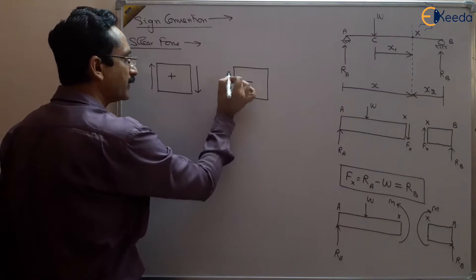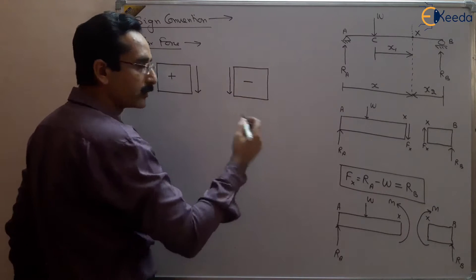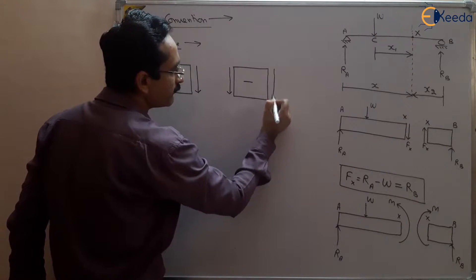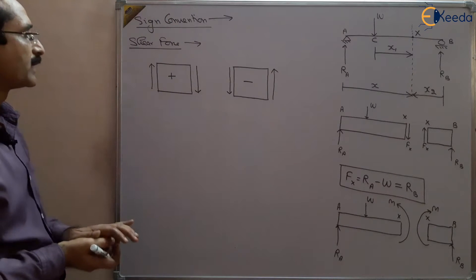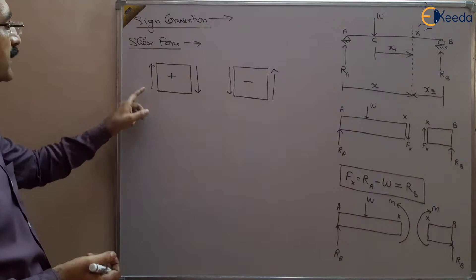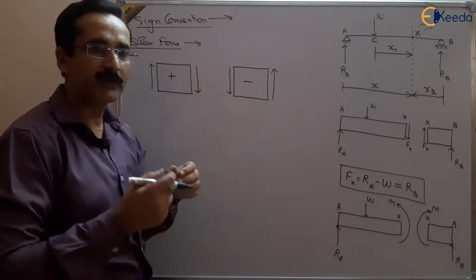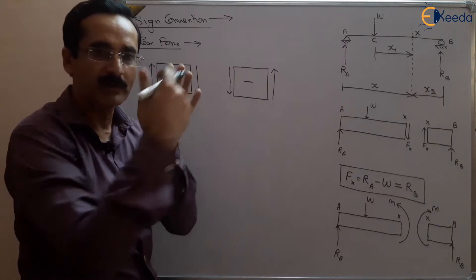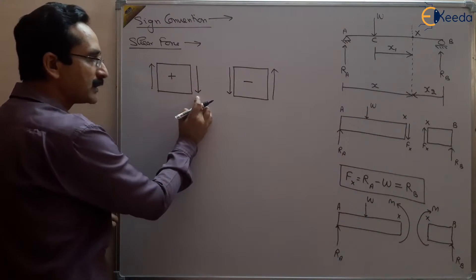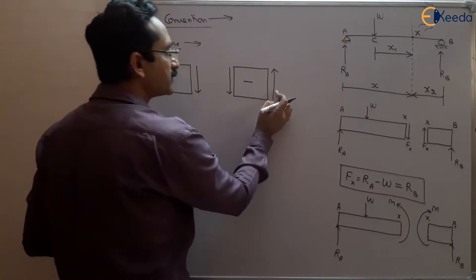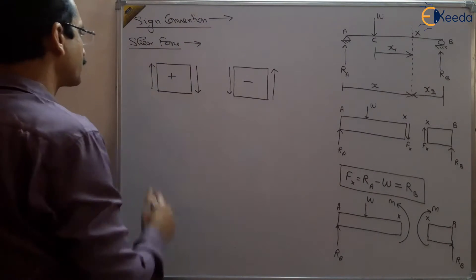Negative shear force is when the leftward force is downward or the rightward force is upward. We have to choose only one direction: if we are choosing the leftward direction then upward forces will be positive and downward forces will be negative. If we are choosing the rightward direction then downward forces will be positive and upward forces will be negative. This is our sign convention for shear force.